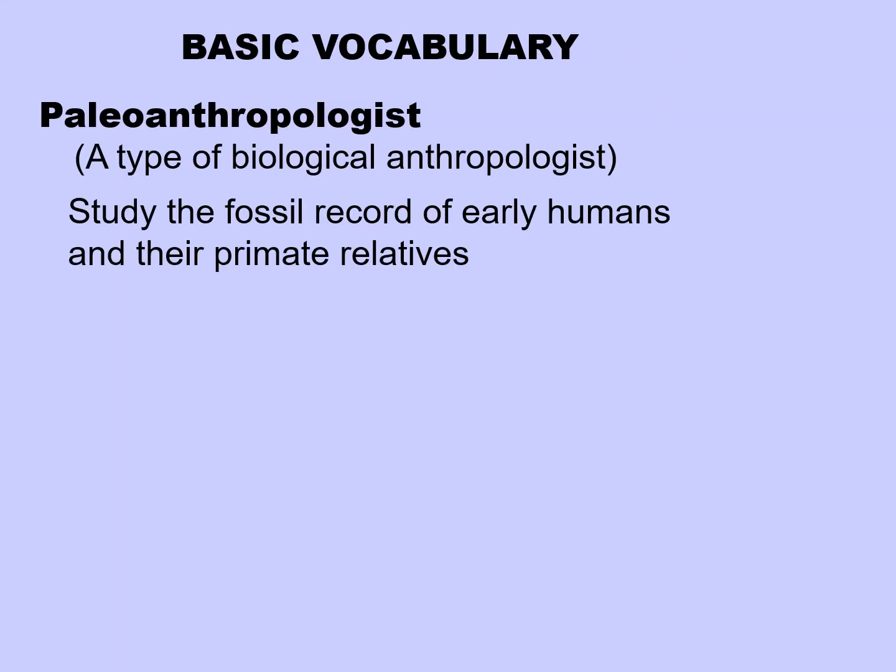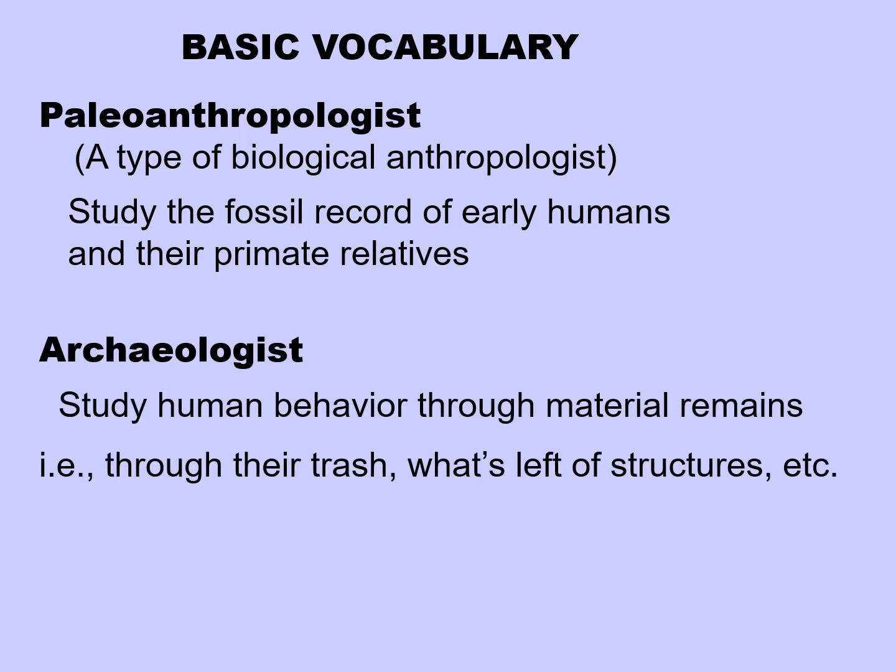Let's start with some basic vocabulary. A paleoanthropologist is a type of biological anthropologist who studies the fossil record of early humans and their primate relatives. An archaeologist studies human behavior through material remains — in other words, archaeologists study trash, what's left of structures, and other kinds of remains like that.